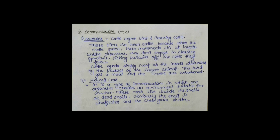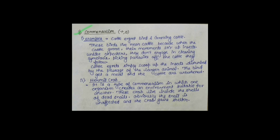Next हम लोग deal करते हैं Commensalism। Commensalism कहने का मतलब — एक को फायदा, और दूसरे को किसी तरह का कोई Effect नहीं हो रहा है। दो Species एक दूसरे के साथ Commensalism के through Interact हैं, जिसमें एक Species को तो फायदा हो रहा है, लेकिन जो दूसरा Species है उसको नहीं कोई फायदा है, नहीं कोई नुकसान है — तो इसे हम बोलते हैं Commensalism।